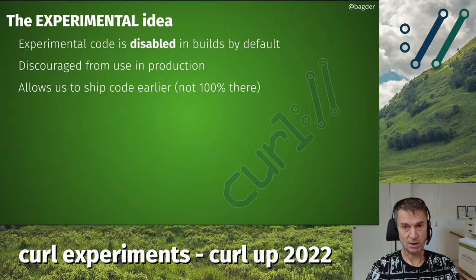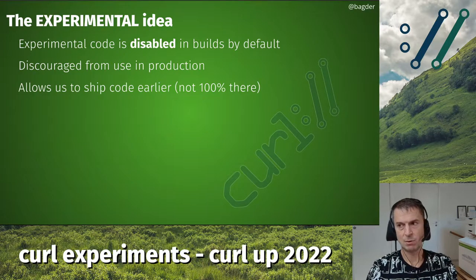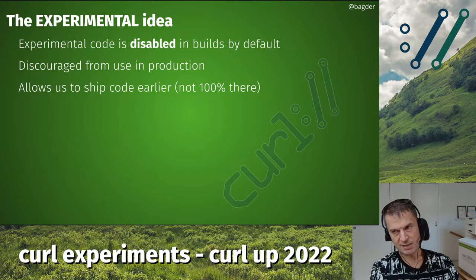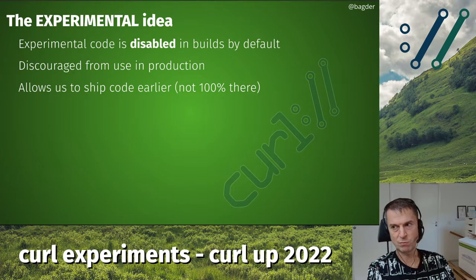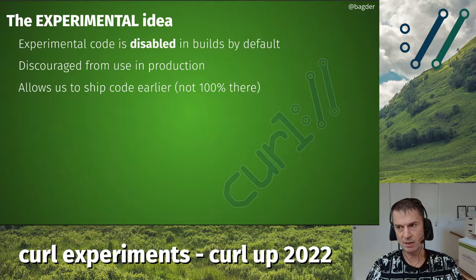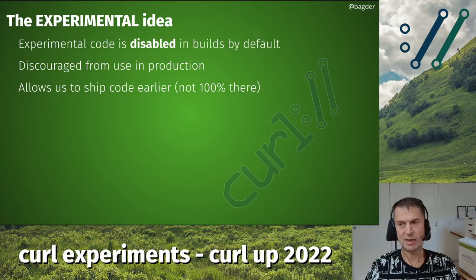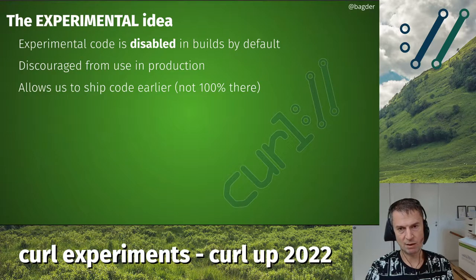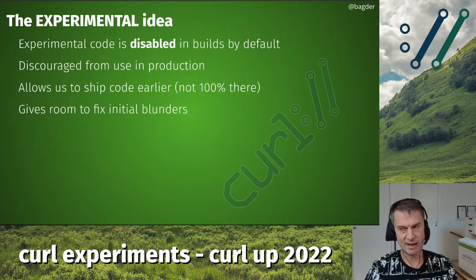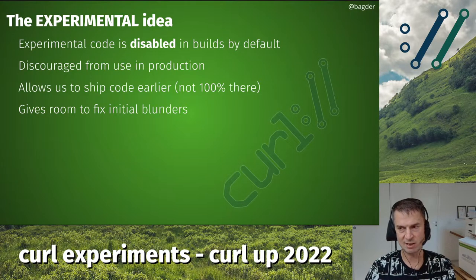It should allow us to ship code earlier because there's that gray zone when we write something new and until the next step when we ship it and we don't change it ever again — API stable forever. That transition is tricky. The experimental state is that middle stage where we haven't carved the API in stone just yet, but we want to allow people to start using it so we can get feedback and eventually carve it in stone.